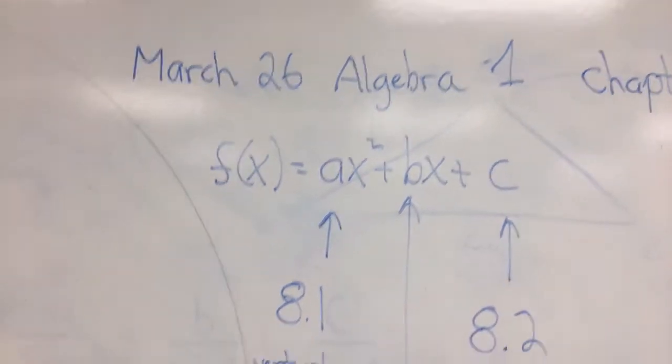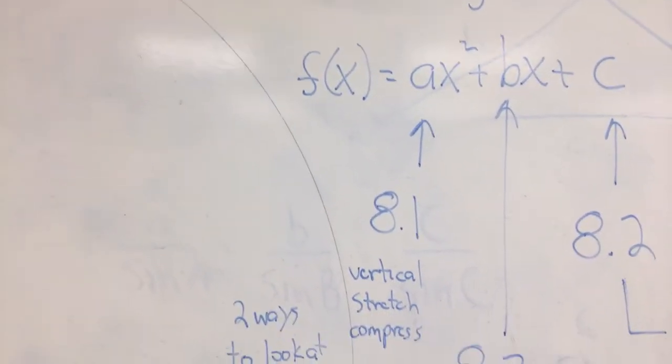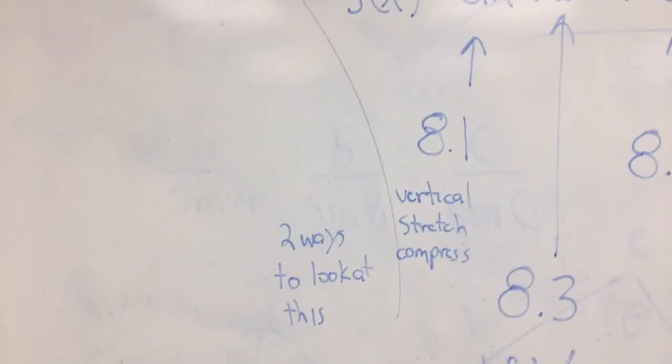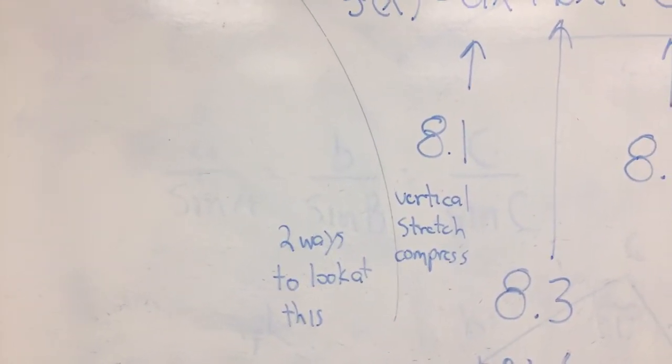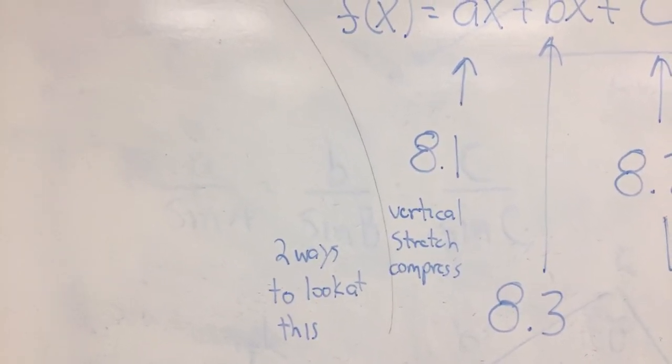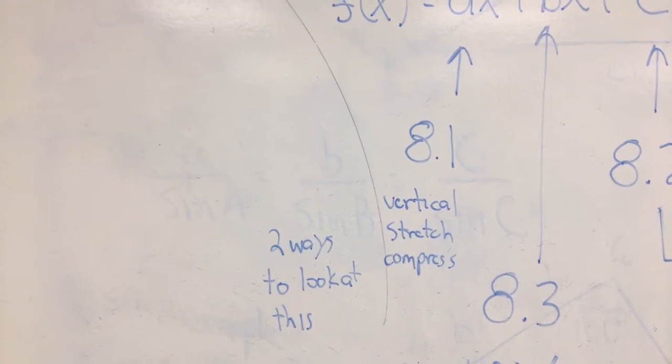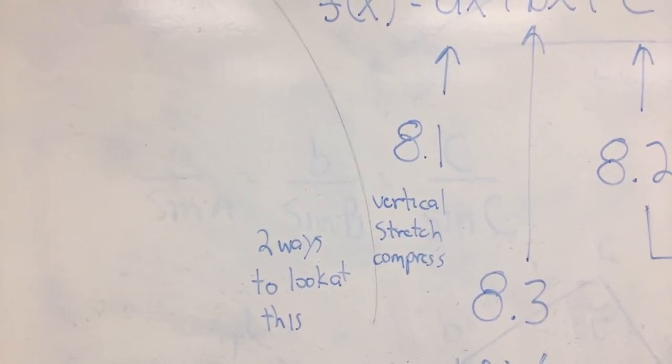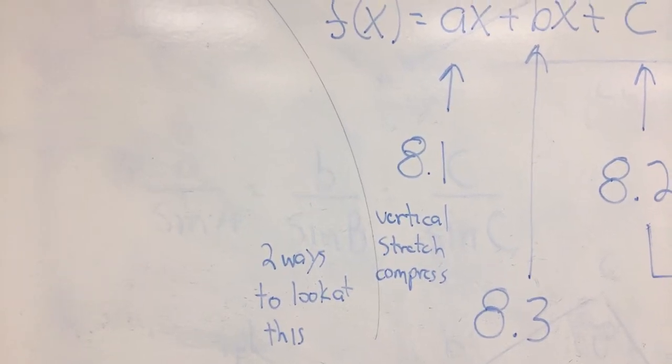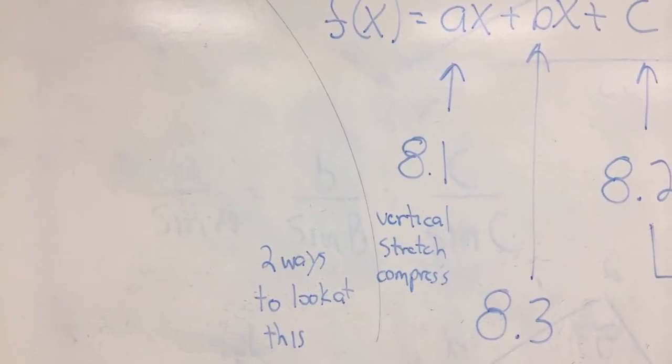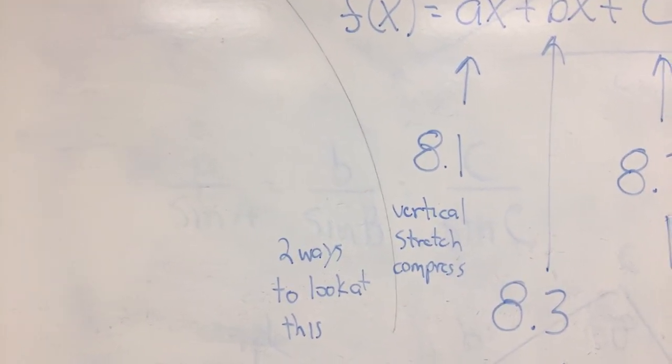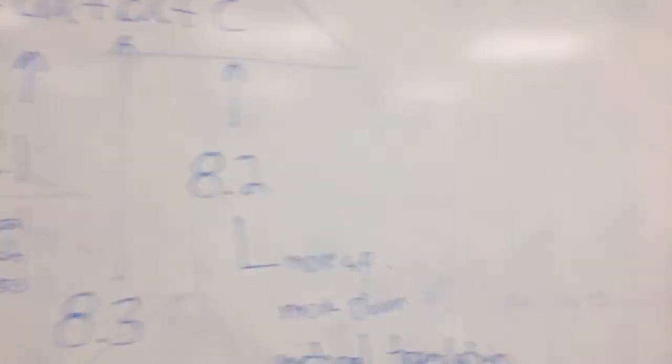So we spent 8.1 focusing on what the a does. That's a vertical stretch or compression. Now you can think of this in two different ways. You can think of it as being pulled up if it's going to get skinny, like a is bigger than one. Or if a is between zero and one, you can also think of it as being horizontally stretched. Or you can think of it as being vertically compressed. Either way, you can look at what a does in one of those two manners. And then we moved on to 8.2.